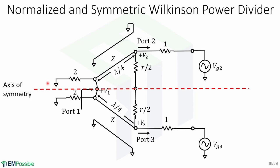This is the normalized and symmetric form of the Wilkinson power divider. The network has been drawn in a form that is symmetric across the midplane, as you can see with this red dotted line showing the axis of symmetry. These resistors in parallel with value 2 combine to give a resistor of normalized value 1, which represents the impedance of a matched source. The quarter-wave transmission lines have characteristic impedance Z, and the shunt resistor has a normalized value of R but it is split along the axis of symmetry into two resistors of value R over 2. We will define two separate modes of excitation given by Vg2 and Vg3 to analyze the circuit.